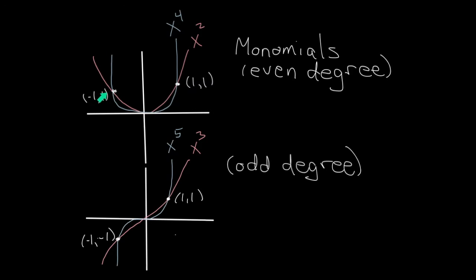If I square or raise to the fourth power any number, it will always be positive. On the other hand, if I raise a negative number to an odd power, it will be negative. So the graph of x cubed and x to the fifth go through (1, 1), but also (−1, −1), since negative 1 cubed is negative 1, and negative 1 to the fifth is negative 1.